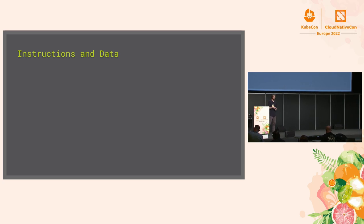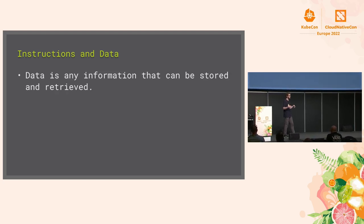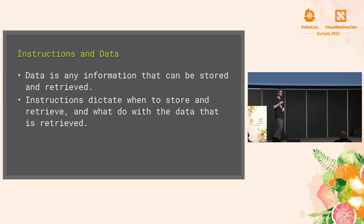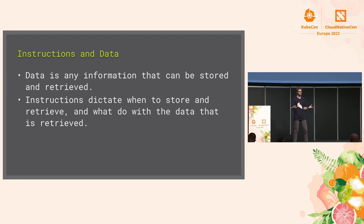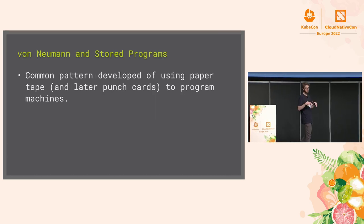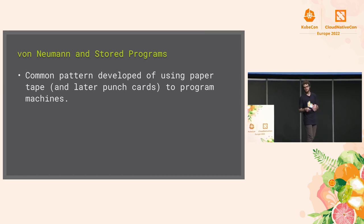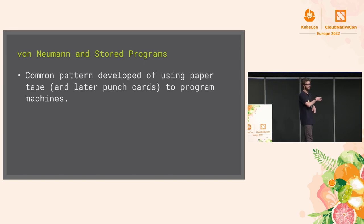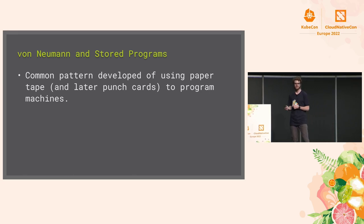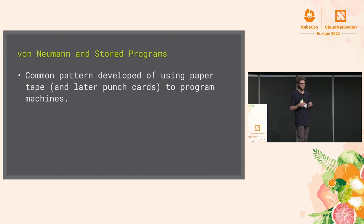This heterogeneity can be described through a logically similar model with five general components. In this talk we're focusing on control, data path, and memory. Control and data path make up the CPU — the brain, the decision-making component. These two broadly operate on two different types of data: instructions and the data the instructions operate on. Data is simply any information that can be stored and retrieved.